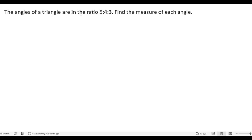The angles of a triangle are in the ratio 5 is to 4 is to 3. Find the measure of each angle. So they have given the ratio of the angles, so let us start the solution.